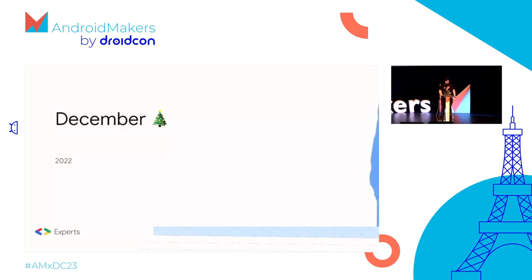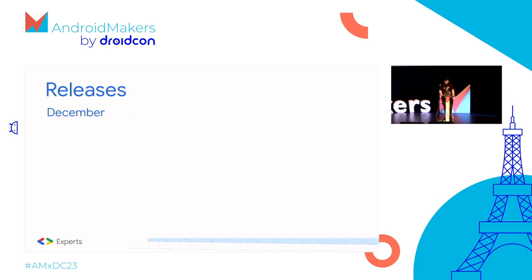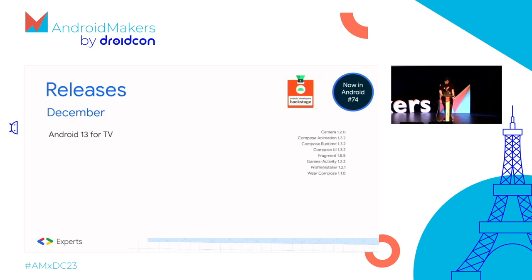Finally, December. It got a bit quiet during December. We had James Ward joining the Android Developers Backstage to discuss Kotlin and K2. Now in Android episode 74, Android Studio Electric Eel RC3, Android 13 for TV, Flamingo Canary 10, Kotlin 1.8 with experimental JVM functions and improvements to Objective-C compatibility. Google released Android 13 TV with improvements for performance and accessibility, and Compose for Wear OS 1.1 with improvements to UX and accessibility.